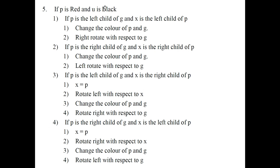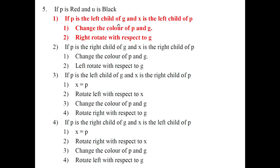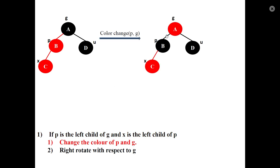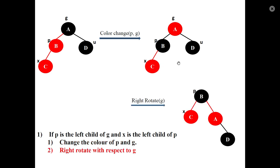First case: grandparent's left is parent and parent's left is X. This is the left-left situation. Insert new node C as grandparent's left-left. Operation: change the color of parent and grandparent, then perform a right rotation with respect to the grandparent.